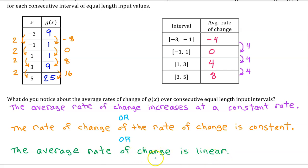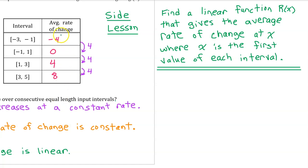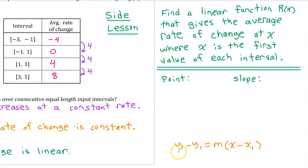Let me do a quick side lesson to show you what I mean, because this concept is going to come up again. When we say the average rate of change is linear, we mean there's a linear function r of x that gives the average rate of change at x, where x is the first value of each interval. Let's find it. We use point-slope form because all we need is a point and the slope. For the point, we pick an input-output pair — let's use the one that includes 0. The output value is the average rate of change, and the input value is the first value of the interval. So we have the point (negative 1, 0).